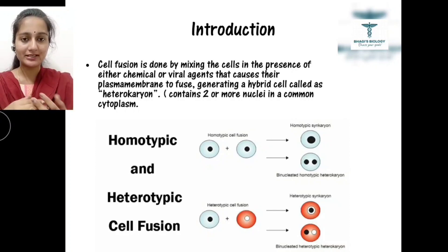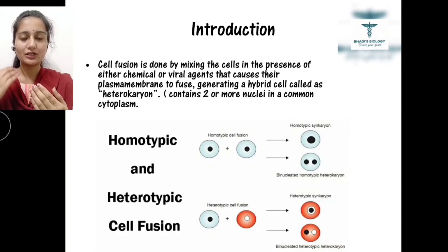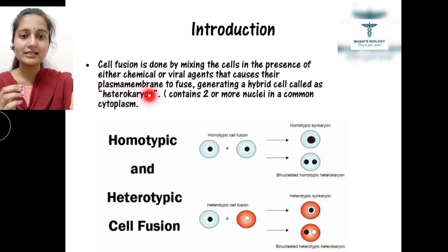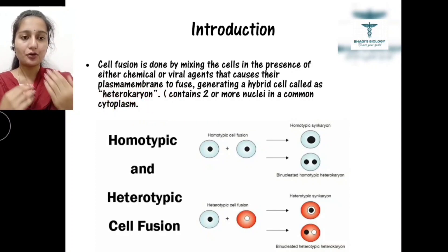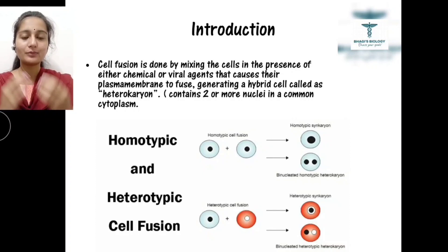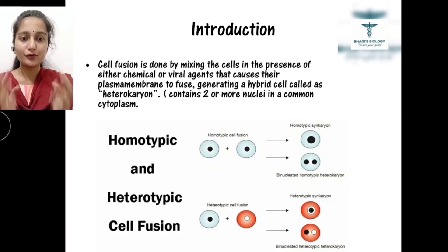Once fusion is done, it generates another variety of cell called a hybrid cell. Hybrid means it is not similar to the parent cells. This new hybrid cell has two nuclei — we call that condition a heterocaryon. Hetero means different, karyon means nucleus. A heterocaryon contains two or more nuclei in a common cytoplasm taken from the two cells.